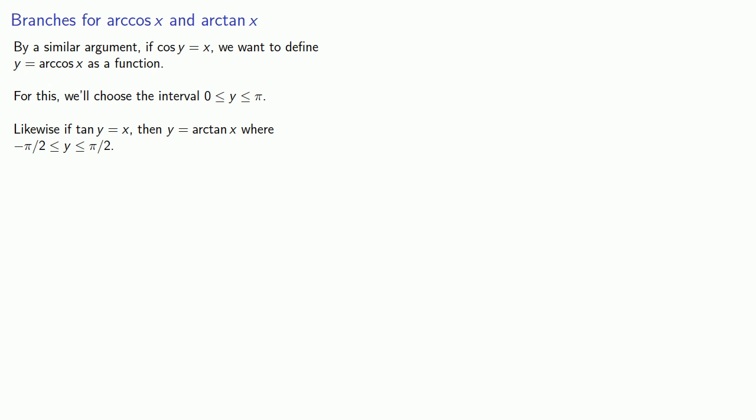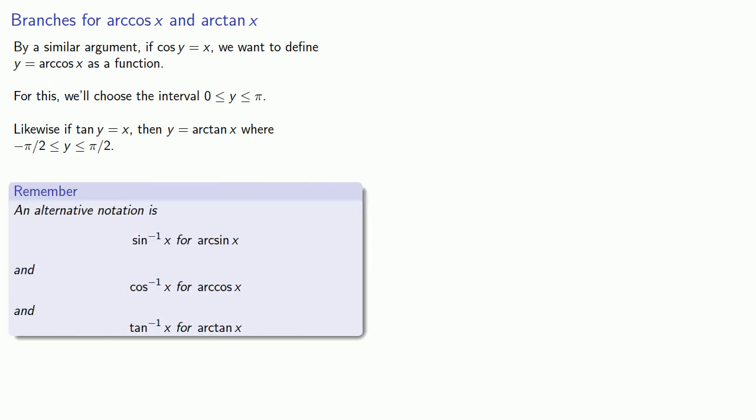One more note. The more important something is, the more names we typically have for it. Even though we use arc cosine, arcsine, arc tangent, an alternate set of notation is sine inverse for arcsine, cosine inverse for arc cosine, and tangent inverse for arctangent. The notation for the inverse trigonometric functions is not consistent.